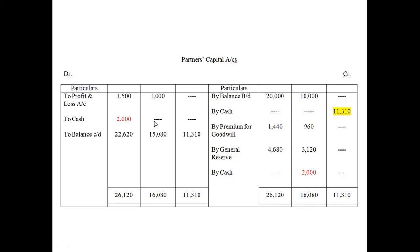Now let us move on to the asset column of the balance sheet. If a Profit & Loss account balance appears in the asset column, it means it is a loss. If it appears in the liabilities column, it means it is a profit. Since it is appearing in the asset column here, it is a loss, shared between A and B as per the old profit-sharing ratio 3:2 — giving 1,500 for A and 1,000 for B.